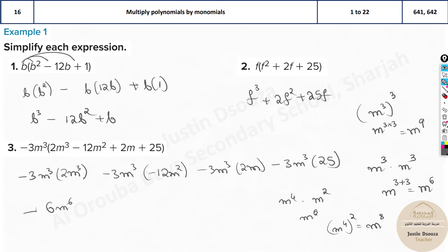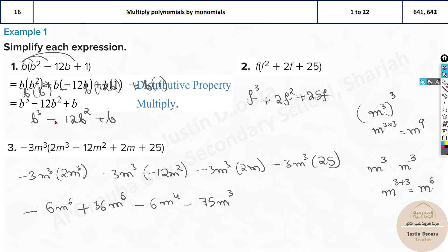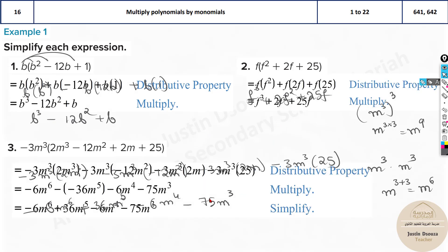Let me just continue over here. Multiply it. It will be minus and minus will be plus here. 12 times 3 is 36, M to the power 5. M cubed plus M squared will be 3 plus 2 is 5. Minus 6M to the power 4 minus 75M cubed. This will be the answer.